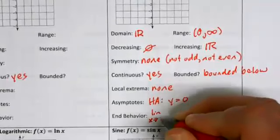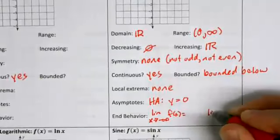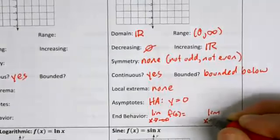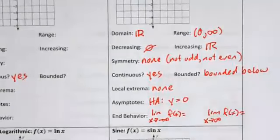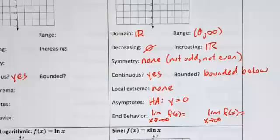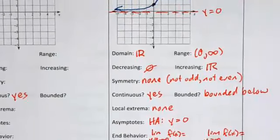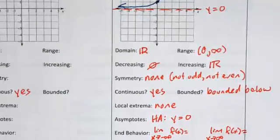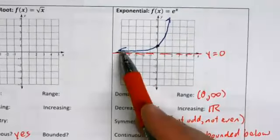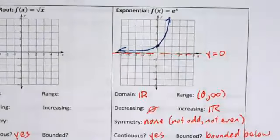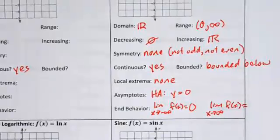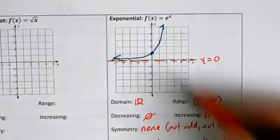For end behavior of the exponential function: set up the notation format first, then fill in. On the far left the graph flattens out toward zero, so the left-side limit equals zero. On the far right the graph goes up forever, so that limit equals positive infinity.